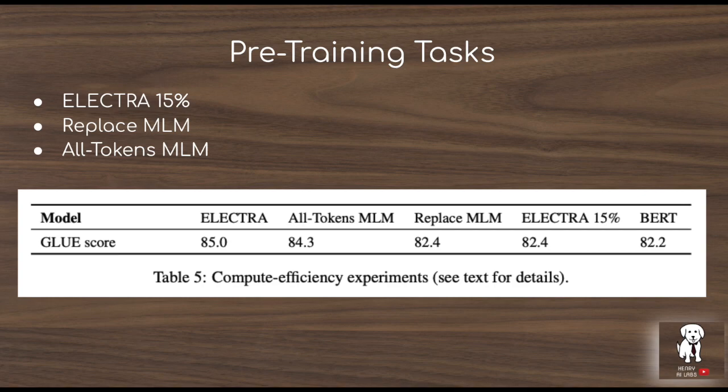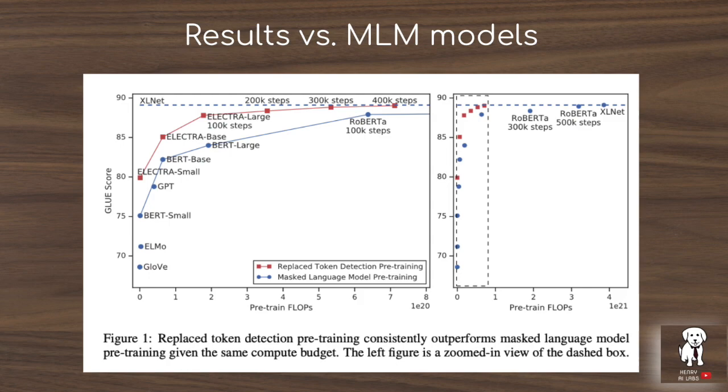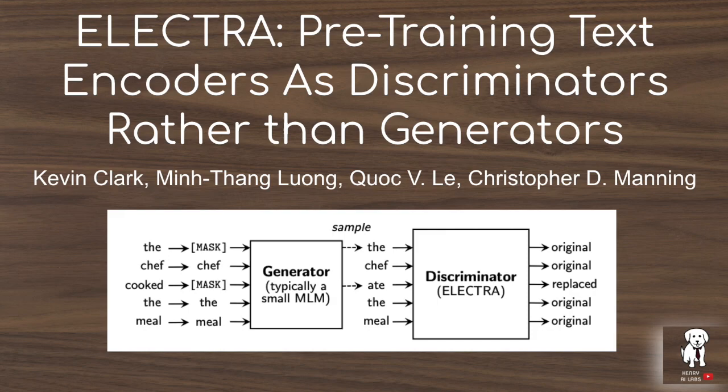ELECTRA Small, trained on one GPU for four days, is able to outperform GPT trained with 30 times more compute. They further show that the ELECTRA model performs comparably to RoBERTa and XLNet with a quarter of their compute, outperforming them with the same amount of compute.